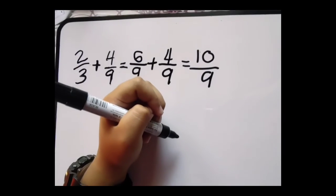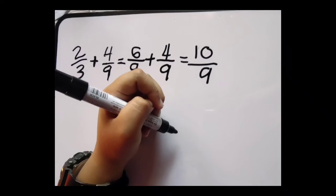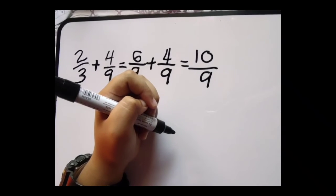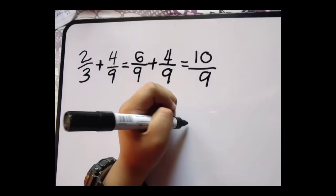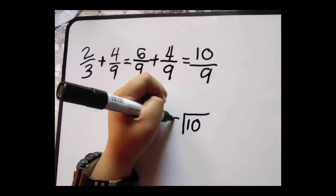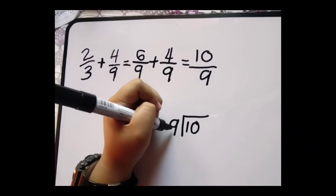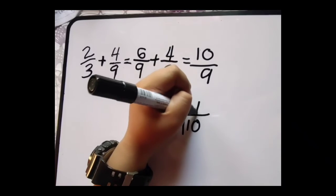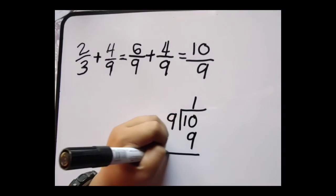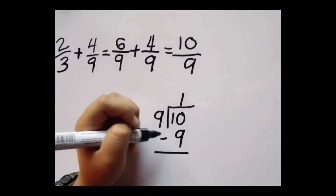Since ang 10/9 ay improper fraction, gagawin natin itong mixed number. Didivide lang natin ang mga ito. Yung 10 ang magiging dividend at yung 9 naman ang magiging divisor. 9 divided by 10 is 1. 1 times 9 is 9. 10 minus 9 equals 1.